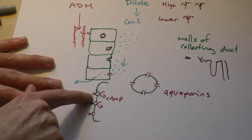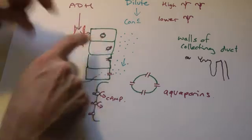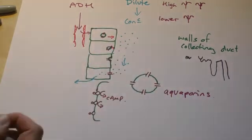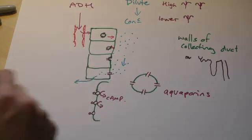ADH into the receptor site on the cell surface membrane here. It will cause these vesicles to move towards the cell surface membrane, where they'll fuse with it. The aquaporins are now part of that membrane.